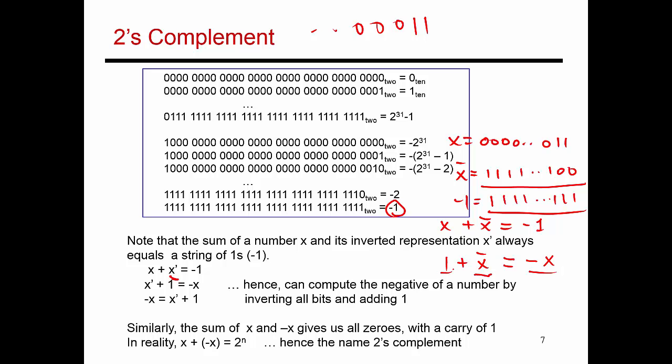So if this is 3, the representation for minus 3 would be first, let's do 3-bar, which is a string of 1's and these two bits inverted. And then I have to add a 1 to it. So 3-bar plus 1 should give me minus 3. And that's basically a string of 1's and then finally a 0 and a 1. So that would be the representation for minus 3.